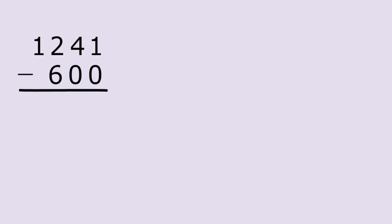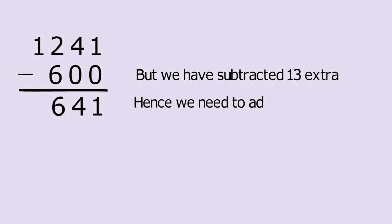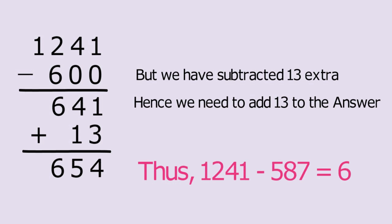Instead of subtracting 857 subtract 600 since 1200 minus 600 is equal to 600. We have that 1241 minus 600 is equal to 641 but we have subtracted 13 too much. Thus, our painful looking subtraction becomes easy addition problem. 641 plus 13 is equal to 654 which is not too hard to calculate in your head. Thus, 1241 minus 587 is equal to 654.